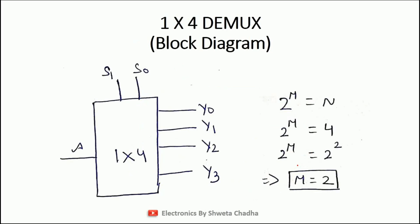Next is the 1×4 demultiplexer: 1 input signal and 4 output signals Y0, Y1, Y2, Y3. Using the formula 2^M = N, where N = 4 = 2^2, the number of select lines is 2: S1 and S0. These two select lines are used for implementation of the 1×4 demultiplexer.